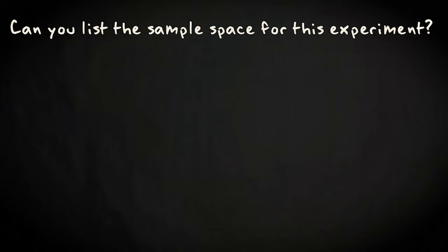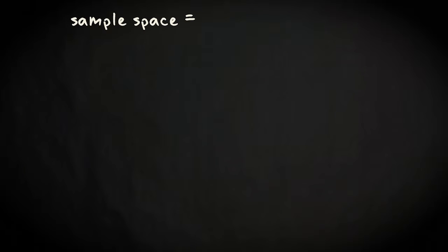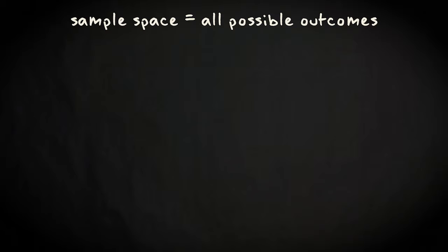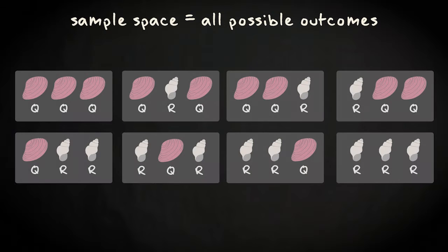Can you list the sample space for this experiment? The sample space of an experiment comprises all the possible outcomes. In this case, the following eight outcomes are possible.